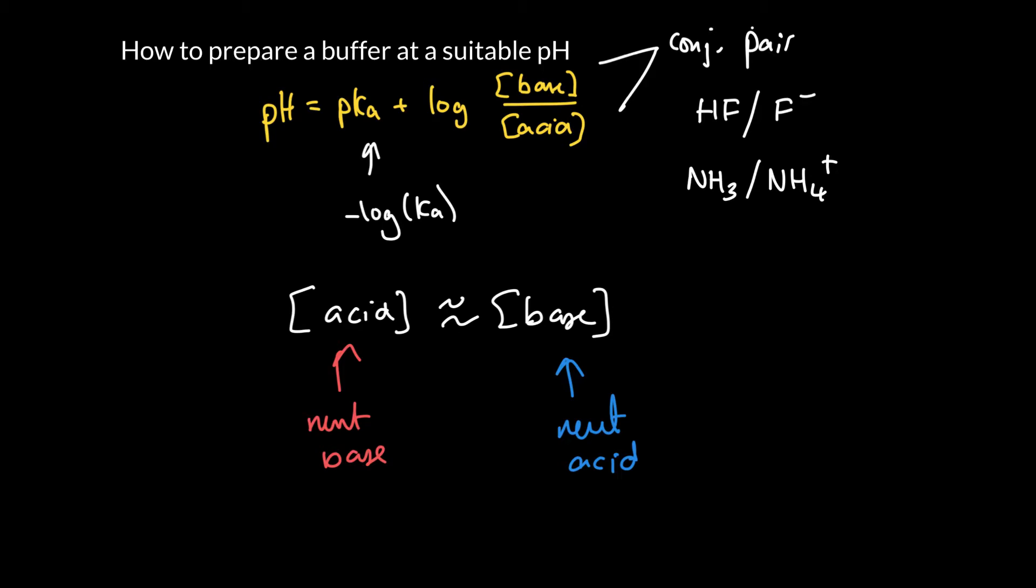Now, if the concentration of the acid in the base in the buffer is the same, then that ratio in the Henderson-Hasselbalch equation will be 1, and the logarithm of the number 1 is 0. And so that means that when you've got equal amounts of acid and base, the pH of your buffer is essentially identical to the pKa of the buffer.